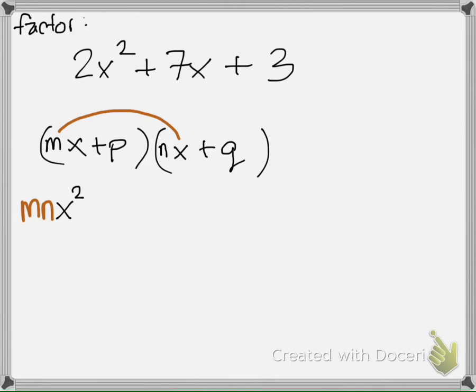FOILing it, m times n, that gives me mn x squared. And then I have my outside terms. And that looks like positive m, q, and then you have your x. Moving along the process, you have your inside terms, p times n, x.